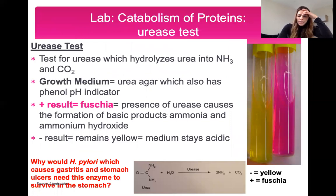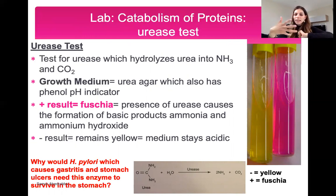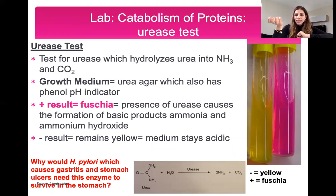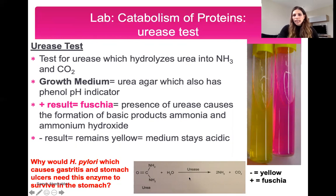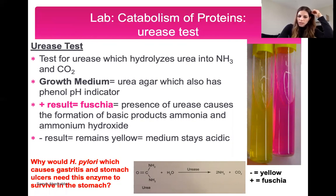The urease test checks for the enzyme urease, which breaks urea into NH3 and CO2. H. pylori, which causes gastritis and stomach ulcers, survives in the acidic stomach because it has urease — it breaks down acidic products and makes the environment more basic. You grow bacteria on urea agar with a phenol pH indicator. If bacteria have urease, they produce basic products (NH3 is alkaline), and you get a hot pink color — positive. No color change is negative.